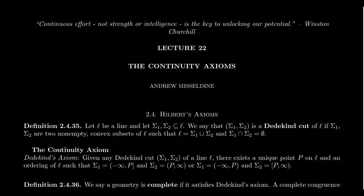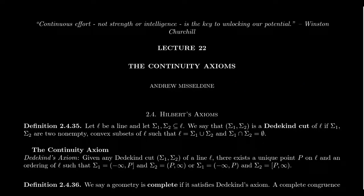The completeness axiom is a property that really is coming from topology, which we've talked about before in this lecture series. We have geometry versus topology — the two are in some way related to each other. You could argue that topology is a geometric notion, and the two are very spatial-oriented. But topology has a different goal in mind than geometry does, though the two interplay with each other very much. The completeness axiom really is a property coming from topology. It's really what one would call real analysis.